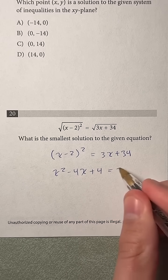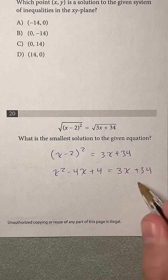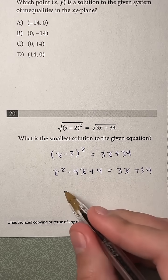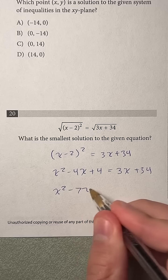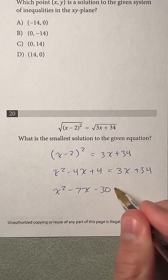and then that equals 3x plus 34. And so now if we move this 3x and the 34 back over to the left, we'll be left with x squared minus 7x minus 30 equals 0.